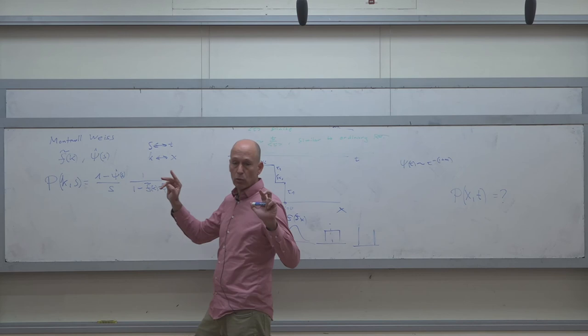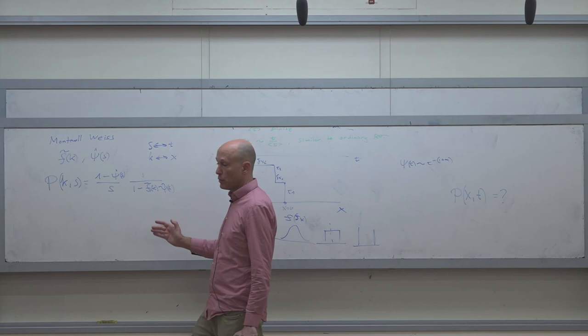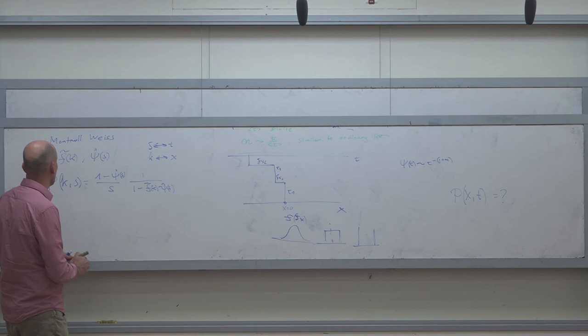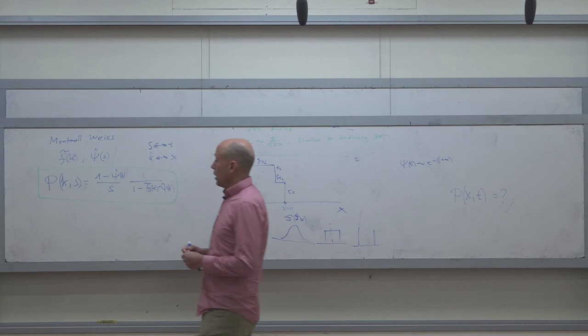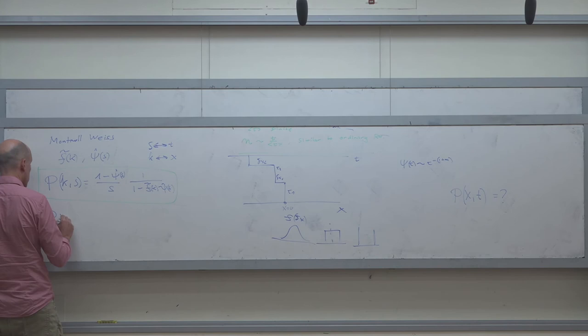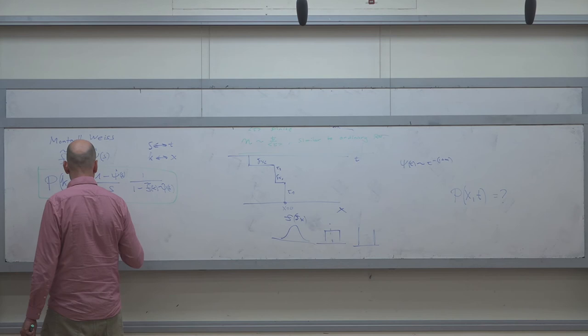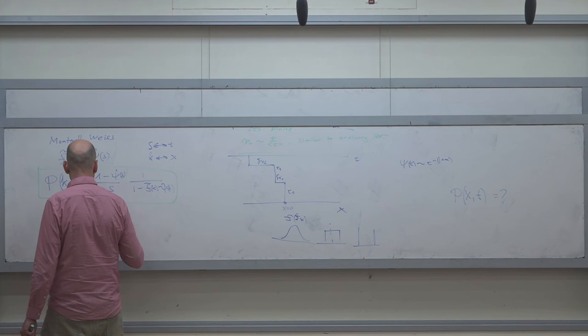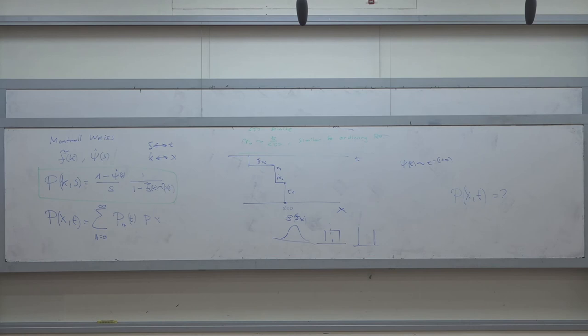Another representation of the solution is as an infinite sum: P(x,t) = sum_{n=0}^{infinity} P_n(t) * P(x|n), where P_n(t) is the probability of making exactly n jumps by time t, and P(x|n) is the PDF of finding the particle at x given n jumps. In Laplace space, P_n(s) = [(1 - psi(s))/s] * psi(s)^n. The beauty is that the time dependence enters only through P_n(s), while P(x|n) is the usual random walk with n fixed steps.